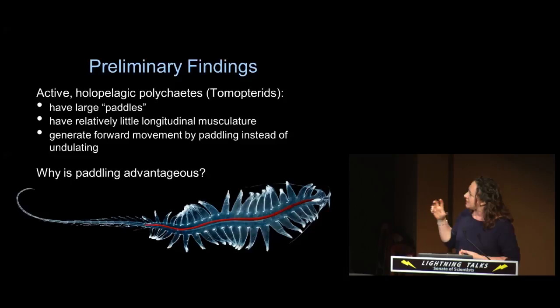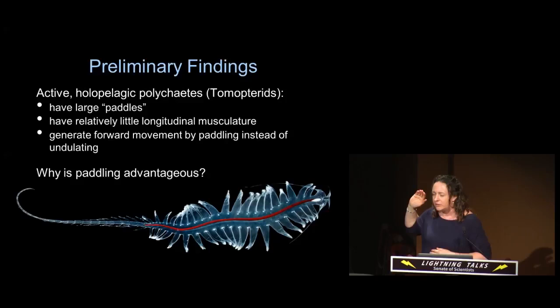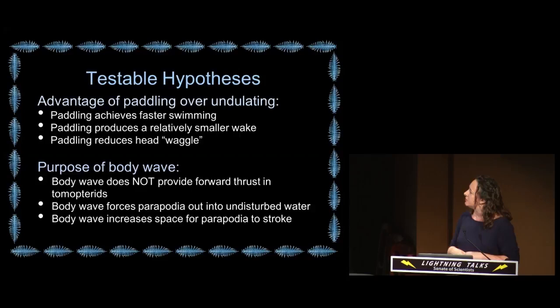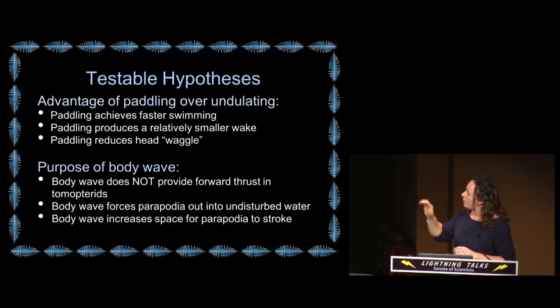What we found is that these tomopterids are active, holopelagic, very modified animals. They have very large paddles, little longitudinal musculature, and their forward motion is not generated by the undulations of their body — it's generated by the paddling that they do. We've broken down the data into basically two groups to ask: why is it more advantageous for pelagic animals to paddle instead of undulate? And what is the body wave for? Because they clearly still do it.